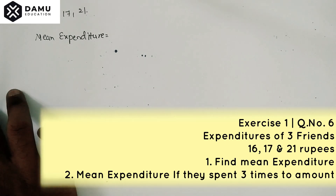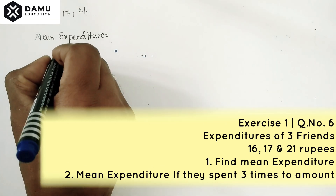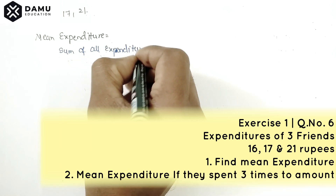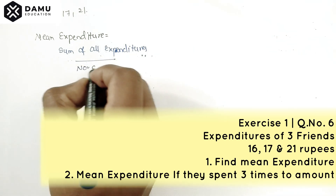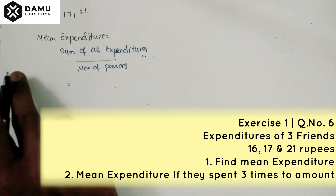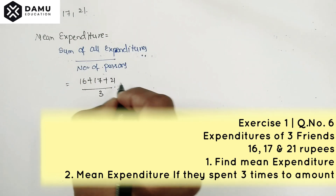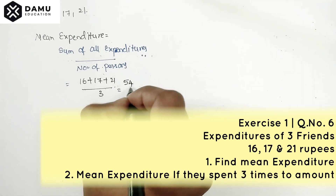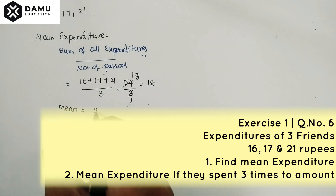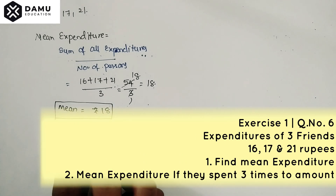Mean expenditure is equal to the sum of all expenditures divided by the number of persons. So sum of all expenditures is 16 plus 17 plus 21, divided by 3. Adding all gives 54 by 3, which equals 18. So the mean expenditure is 18 rupees.